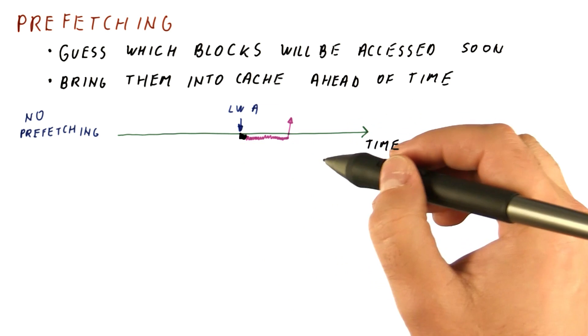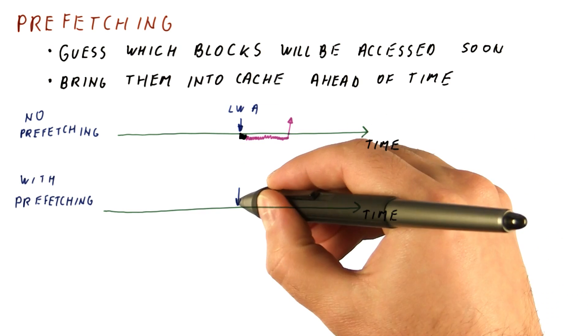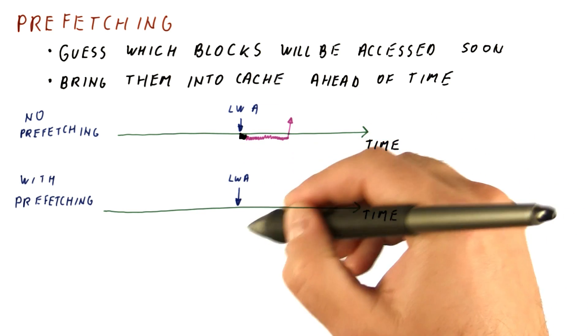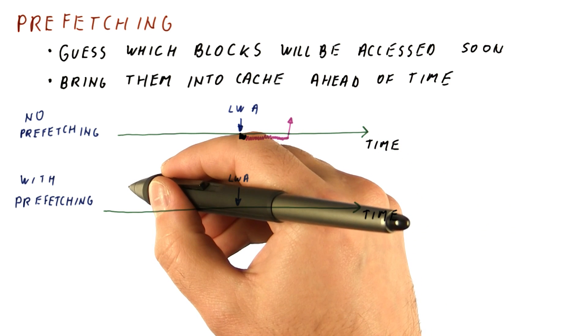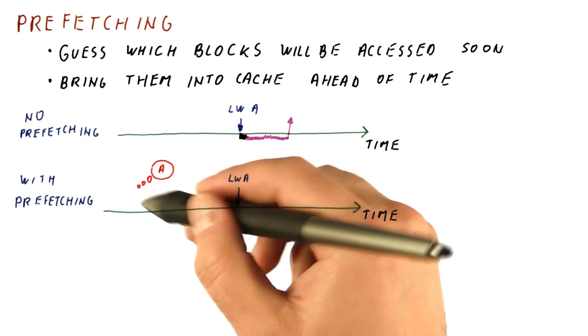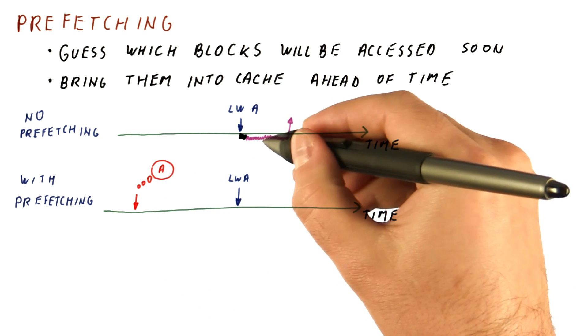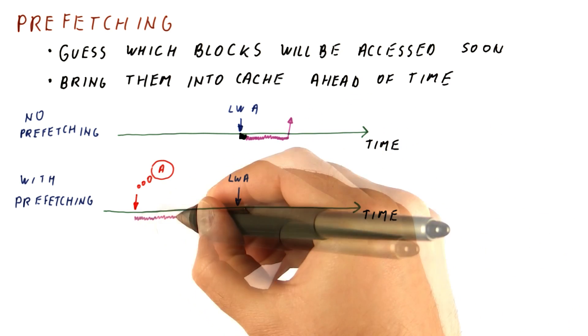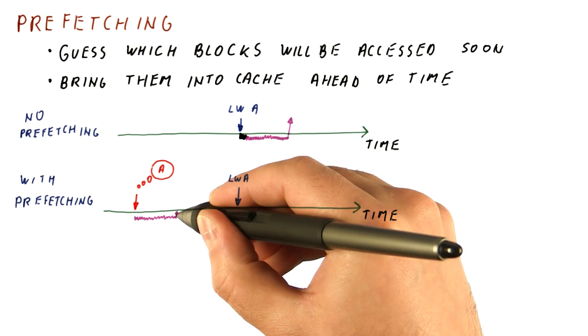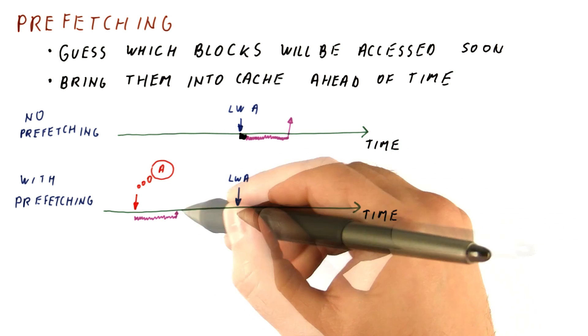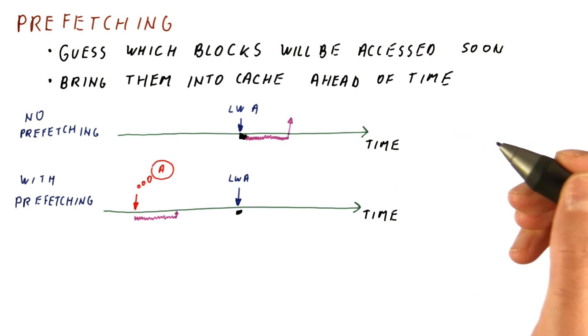So this is what happens with no prefetching. With prefetching, assuming that the load would happen here, sometime before the load we have to guess that A will be accessed and request it from memory. Now what was memory latency here will be here, and at this point the block is in the cache. So when we try to load it, we have a hit.